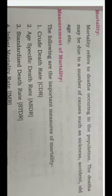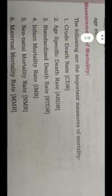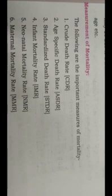We will look at different formulas or measures of mortality. Mortality refers to the deaths occurring in the population — deaths may be due to a number of causes such as sickness, accident, old age, etc. The formulas we will cover are: Crude Death Rate (CDR), Age Specific Death Rate (ASDR), Standardized Death Rate (STDR), Infant Mortality Rate (IMR), Neonatal Mortality Rate (NMR), and Maternal Mortality Rate (MMR).